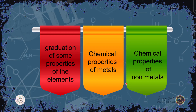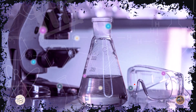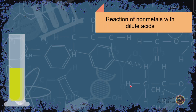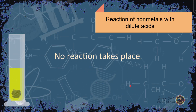Now the chemical properties of non-metals. First, the reaction of non-metals with dilute acid: when copper is placed in dilute acid, no reaction takes place. Non-metals do not react with dilute acids.